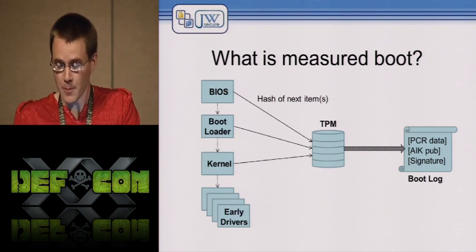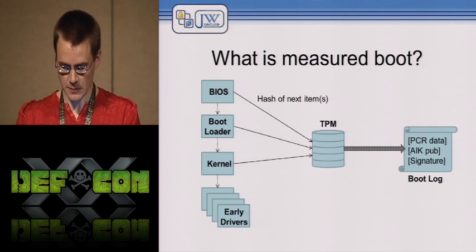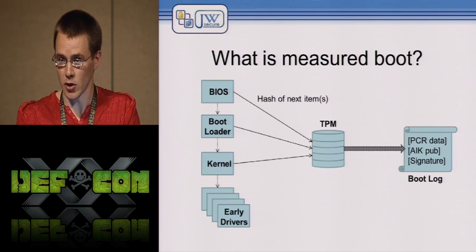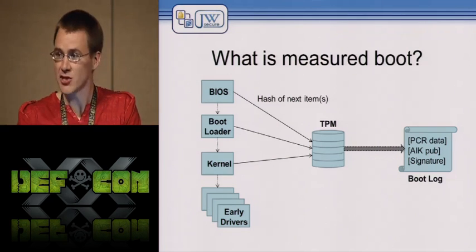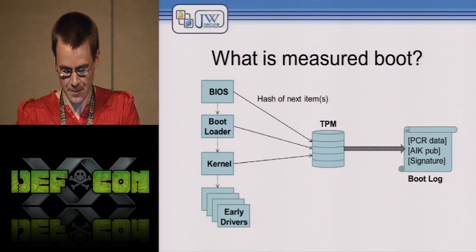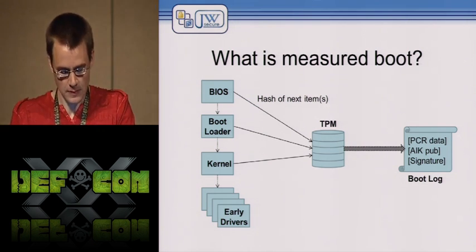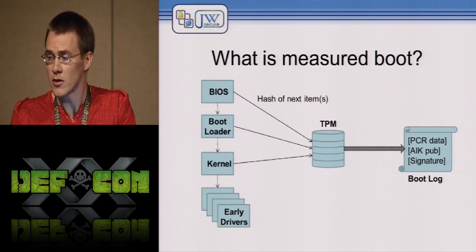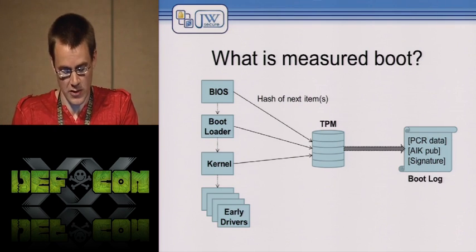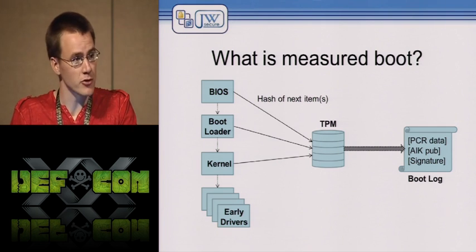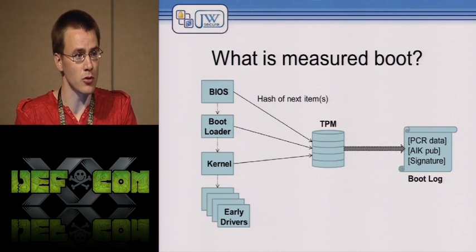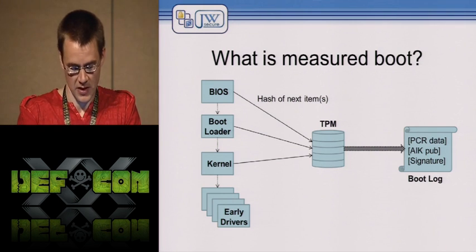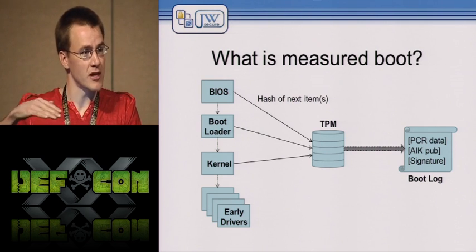With measured boot, starting at the BIOS — whether UEFI or legacy — before each next component in the boot chain is loaded and executed, the previous component computes the hash of the next component on disk and stores that hash in the TPM's platform configuration registers, or PCRs. Starting with the BIOS, it takes a hash of the boot loader — in Windows 8 that's bootmgr.exe — stores it in the TPM, then hands off control. Bootmgr.exe launches winload or winresume, which then launches the kernel. Each component along the chain stores the hash of the next.